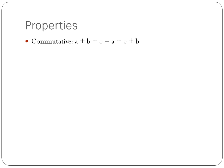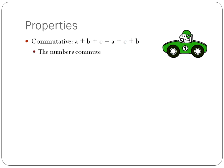The commutative property is like this: if you have A plus B plus C, when you're adding, it's the same thing as adding A, then C, then B. When you're adding, it doesn't matter what order you go in. The numbers commute from one place to another — that's the way I remember it. The commutative property: commutes from one place to another.